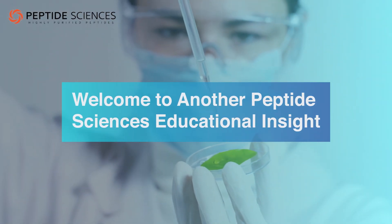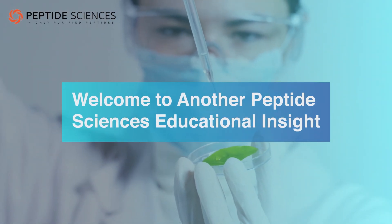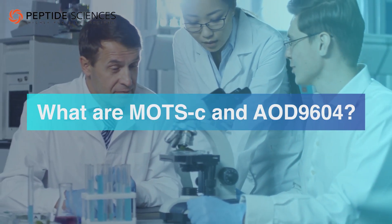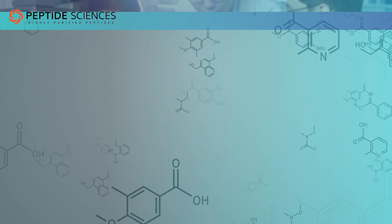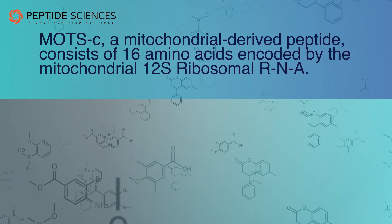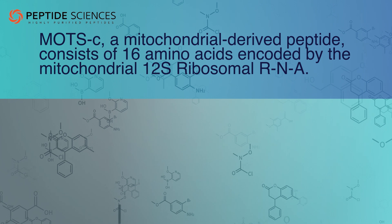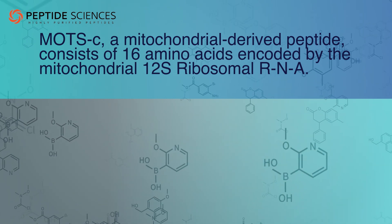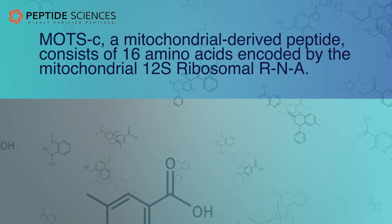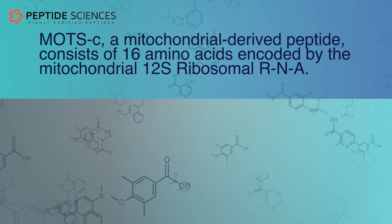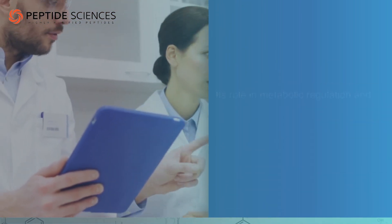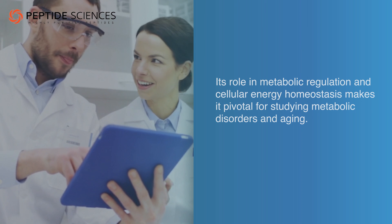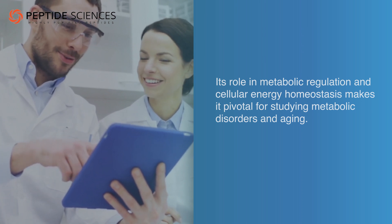Welcome to another Peptide Sciences educational insight. Today we delve into MOTC and AOD. MOTC, a mitochondrial derived peptide, consists of 16 amino acids encoded by the mitochondrial 12S ribosomal RNA. It activates the AMPK pathway, enhancing insulin sensitivity and regulating lipid metabolism. Its role in metabolic regulation and cellular energy homeostasis makes it pivotal for studying metabolic disorders and aging.